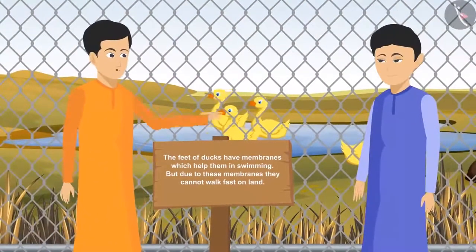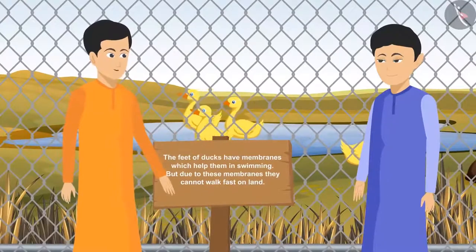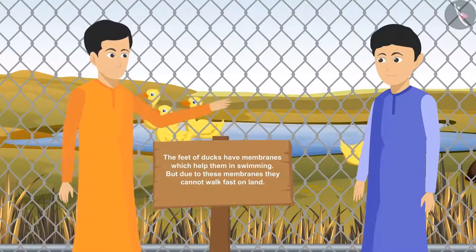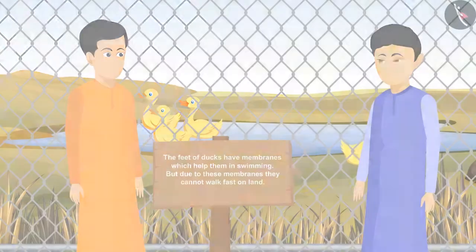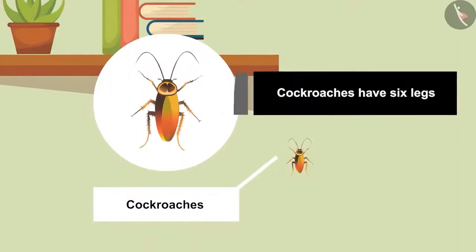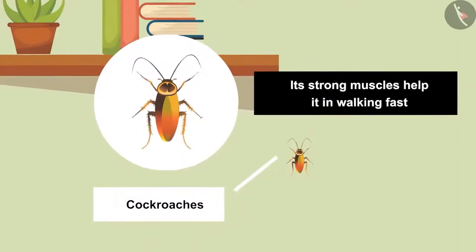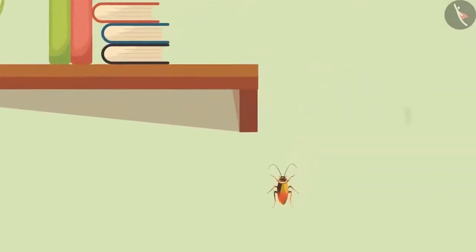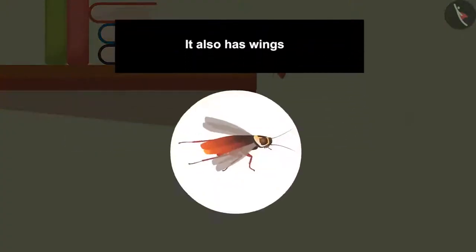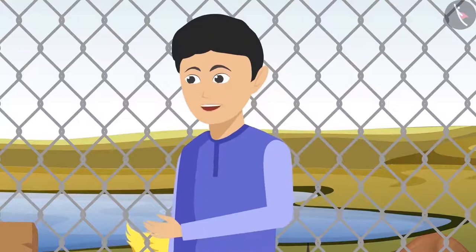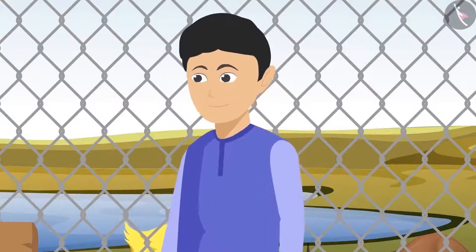'Sikandar, there is someone at my home as well who can run, swim, and even fly.' 'Who?' 'The cockroach! It is an expert in all three tasks. Cockroaches have six legs and strong muscles that help them walk fast — they are so strong that a cockroach can easily climb on walls. It also has wings which enable it to fly short distances.' 'Yuck, cockroaches are so ugly and scary! Let's look for some other awesome animals. Why don't we visit the aquarium?'